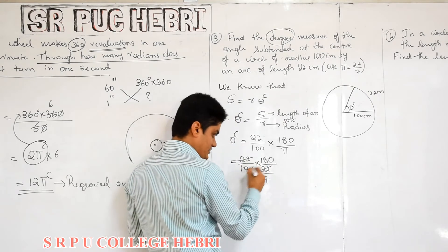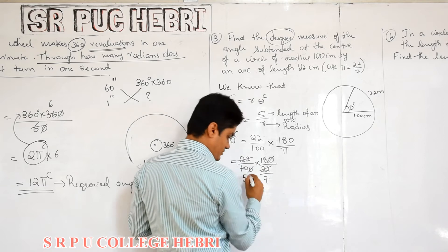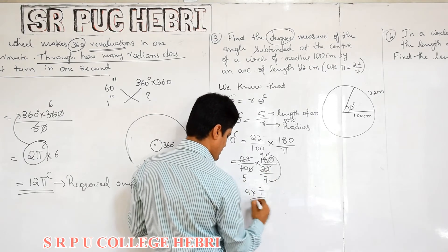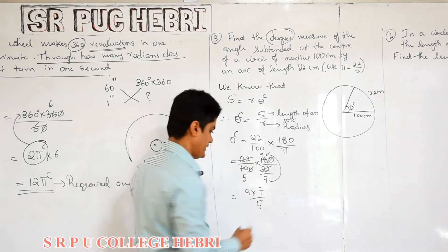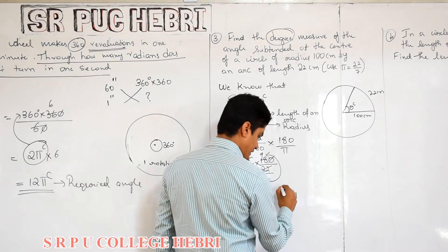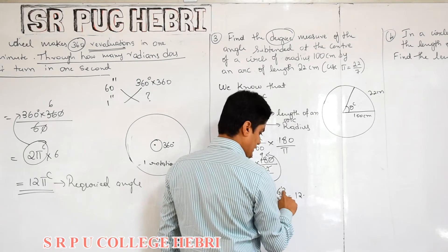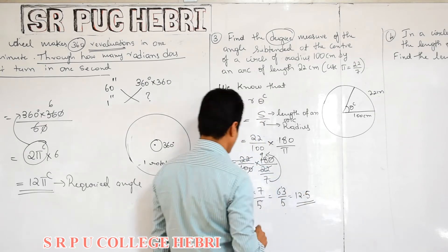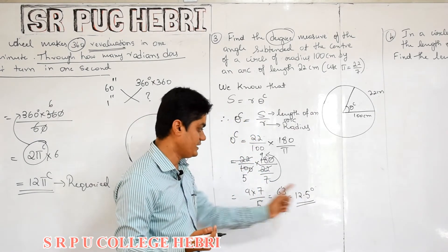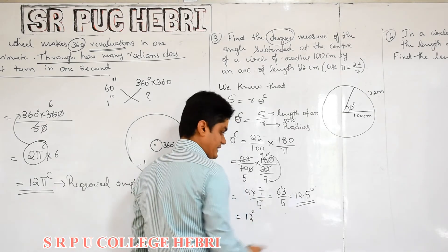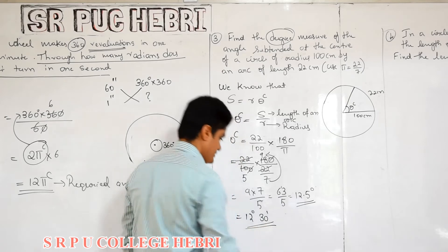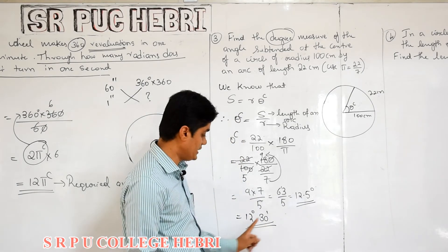After simplification: 2 fives, 2 nines, 7 moves up. So it becomes 9 into 7 divided by 5, which is 63 by 5. That gives 12.5. The unit is degree. When degree contains a fraction, write in terms of minute and second. 0.5 degree is nothing but 30 minutes. So the answer is 12 degree 30 minutes.